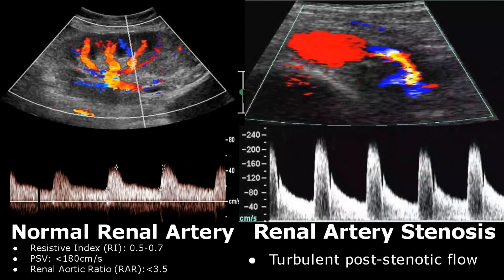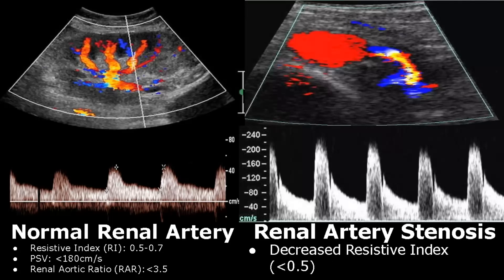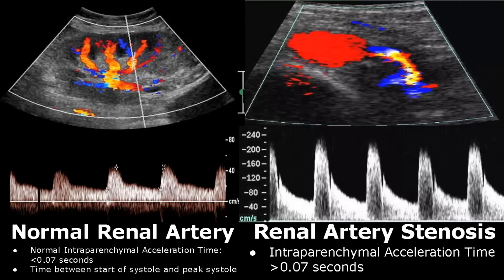Turbulent post-stenotic flow is another feature of stenotic renal artery. We can see color mixing here, indicating turbulence in this region, with PSV above 200 centimeters per second. Renal artery stenosis will also have a decreased resistive index, below 0.5. Intraparenchymal acceleration time is the time between start of systole and peak systole. Normally this should be less than 0.07 seconds, but in renal artery stenosis it will exceed 0.07 seconds.